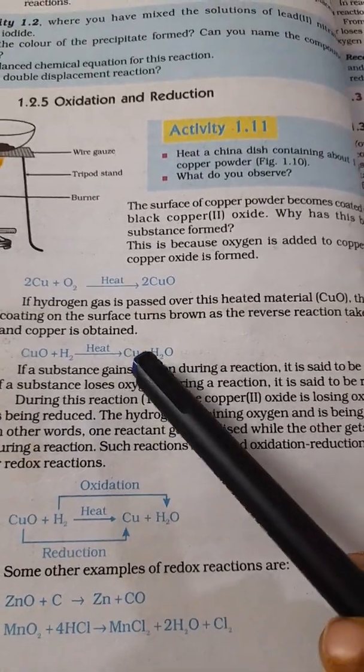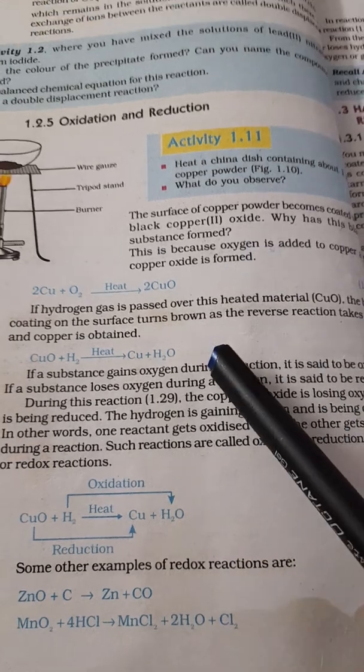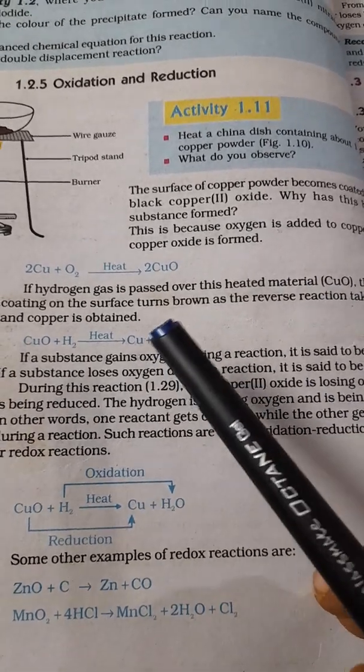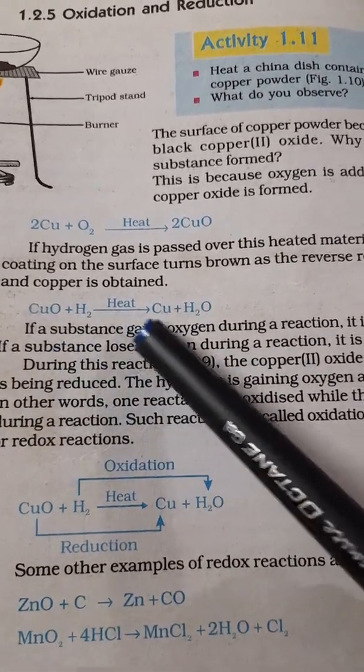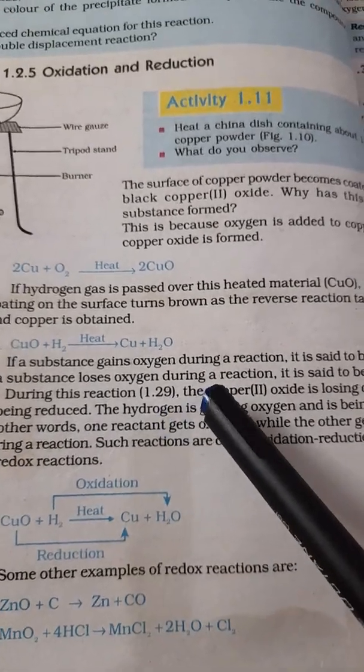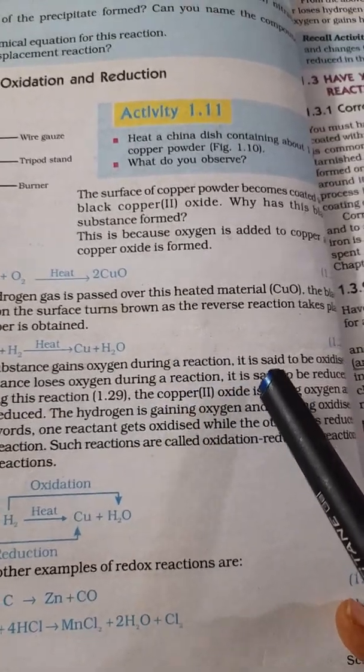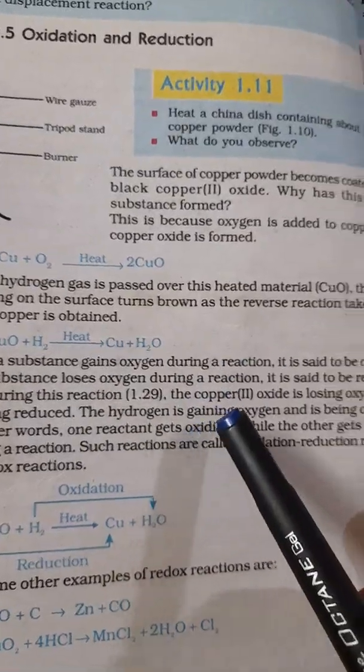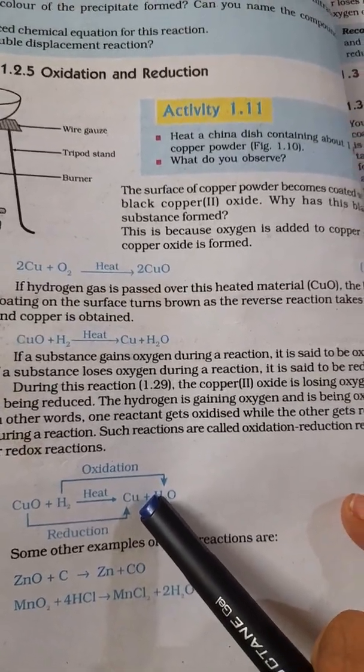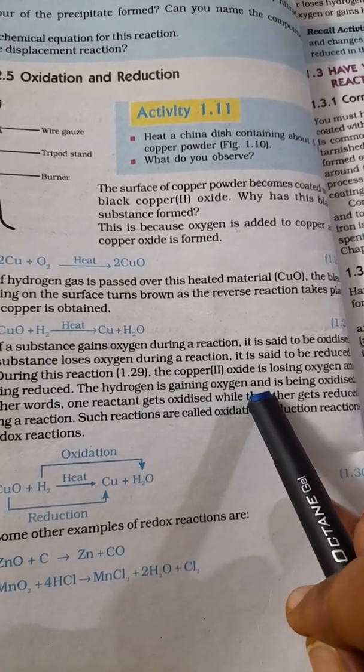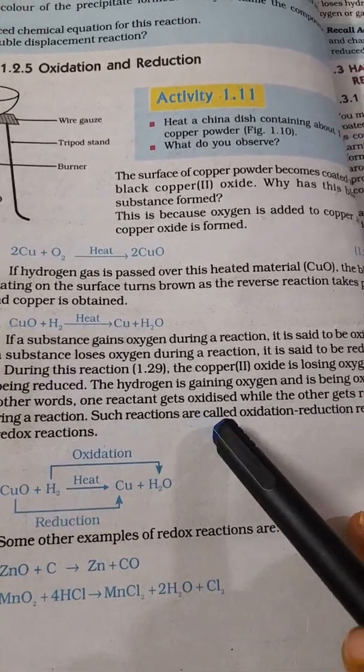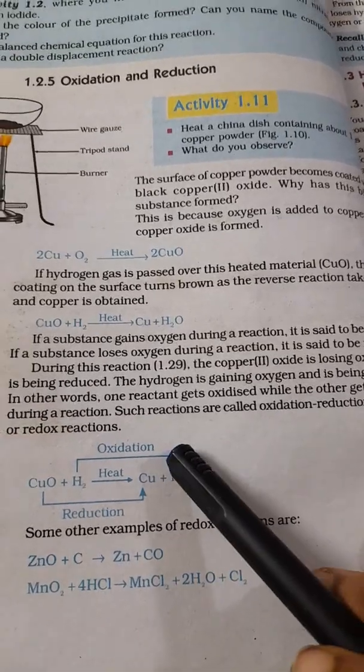Suppose if hydrogen gas is passed over this heated material copper oxide, then the black coating on the surface will turn brown as the reverse reaction takes place and you get copper. Copper oxide plus hydrogen when you heat it you will get copper plus water. What do you understand from this? If a substance gains oxygen during reaction we call it oxidation. And if a substance loses oxygen during a reaction it is said to be reduced.